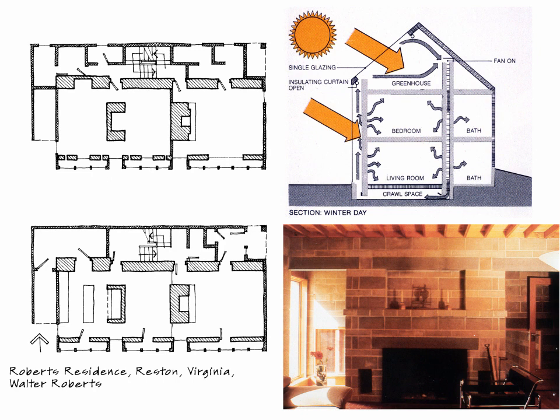The living spaces and bedrooms are on the side that gets the most heat. The bathrooms, storage, and circulation — those service rooms — are in that core along the north side. They don't need as much heat, and they also serve as a kind of buffer to the colder north side of the building.